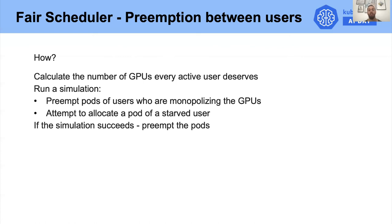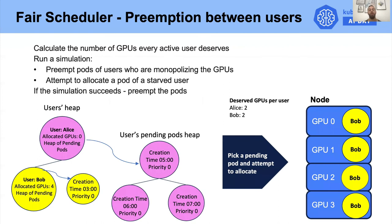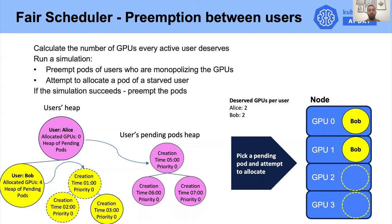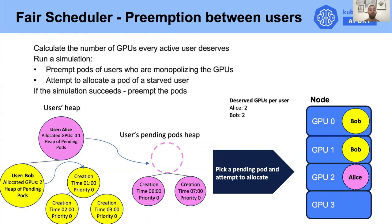Let's see an example. We have four GPUs in the cluster, so we calculate that every user should have two GPUs each. This means Bob is using two GPUs more than he should. So we preempt two of Bob's pods and move those pods back to the pending pods heap. Now we have two free GPUs and apply our allocation algorithm — we allocate Alice's first pod, update the GPU count, and since she is still starved she remains at the top of the heap, so we allocate a second pod. As you can see, Bob and Alice are now sharing the cluster fairly.